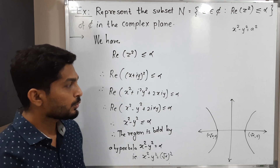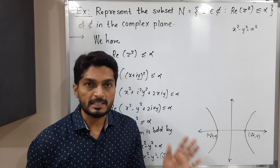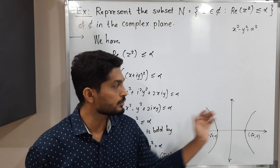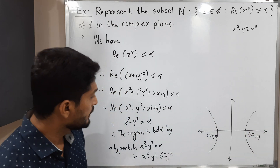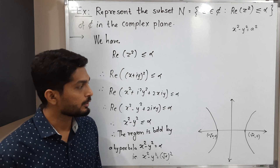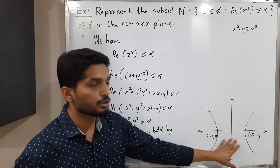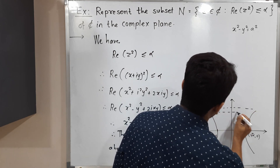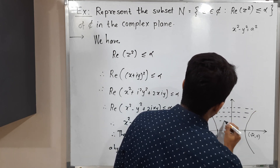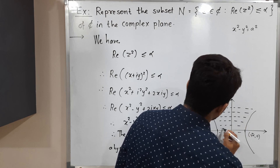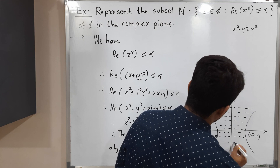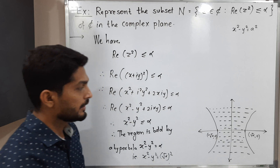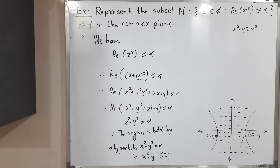We have an inequality, not just an equation, so we need a region. The hyperbola divides the entire complex plane into two parts — the interior and the exterior. Because of the less than or equal to condition, the required region is the interior part bounded by both branches of the hyperbola. This is how we represent the set N in the complex plane.